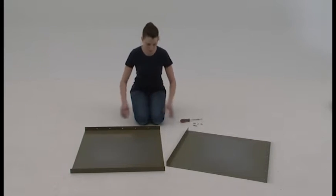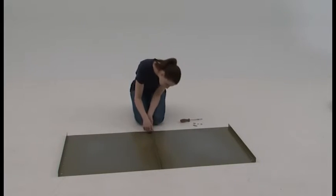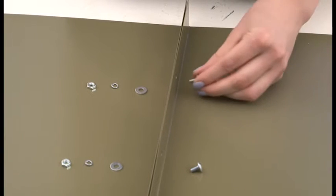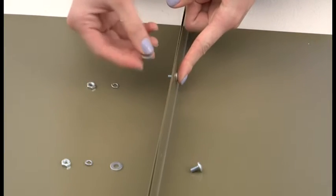Start by assembling the drum body. Place the two blank drum panels with their flanges next to each other. Fasten them together with the number 10 bolts, flat washers, lock washers and nuts.